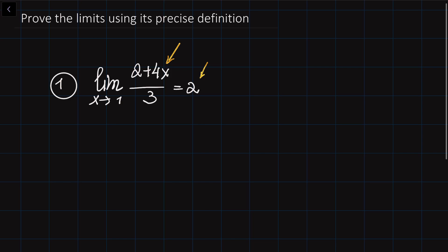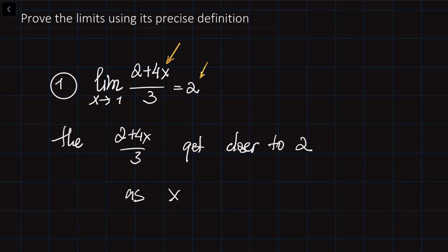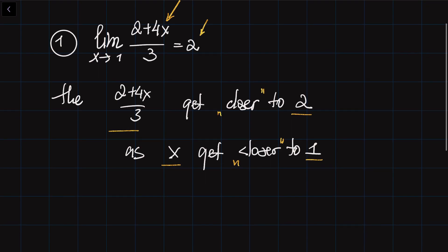Let me first of all remind you what the precise definition of the limit means. We usually say that the limit of this function is equal to 2, meaning the function (2x+4)/3 gets closer to 2 as x gets closer to 1. This is a rough definition of the limit. So it means that if x is very close to 1, then this function comes very close to 2. The precise definition involves controlling these distances.